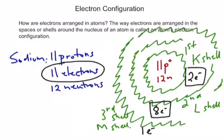So its electron configuration can be written as 2, 8, 1 — 2 in the first shell, 8 electrons in the second, and 1 electron in the third.